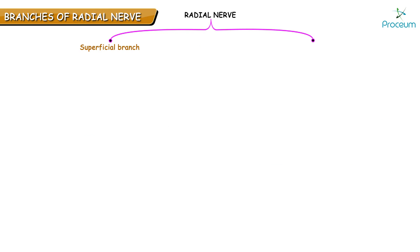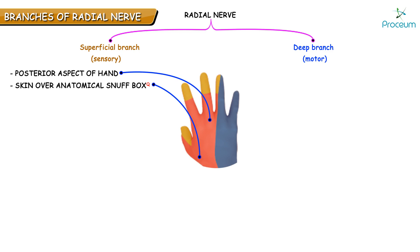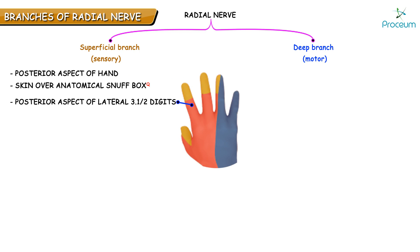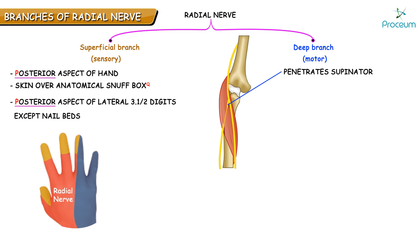The radial nerve gives off a superficial branch of the radial nerve, which is purely sensory, and a deep branch which becomes the posterior interosseous nerve, which is purely motor. The superficial branch enters the hand over the anatomical snuff box and supplies the skin on the posterior aspect of the hand and the posterior aspect of the lateral three and a half digits, except the nail beds. The nail beds are supplied by the median nerve. The deep branch penetrates the supinator muscle and becomes the posterior interosseous nerve.